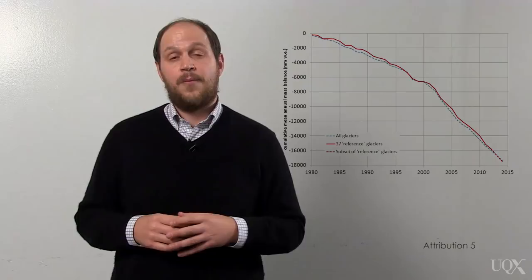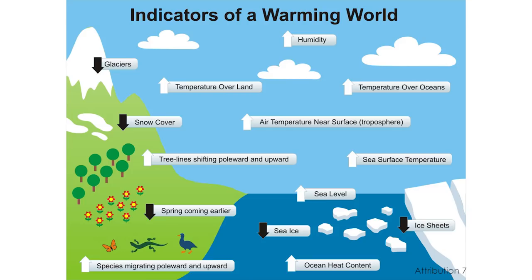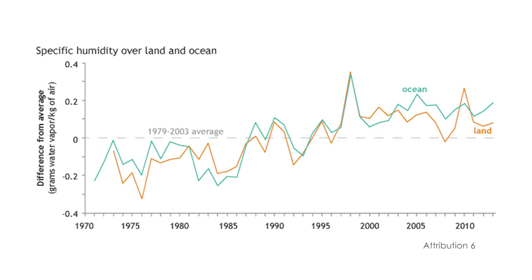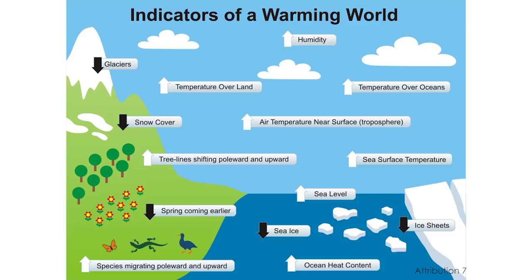Warmer air holds more moisture, and over both land and sea, moisture has been increasing in the air, just like we'd expect in a warming world. These and many other indicators tell us the planet is unquestionably heating up.